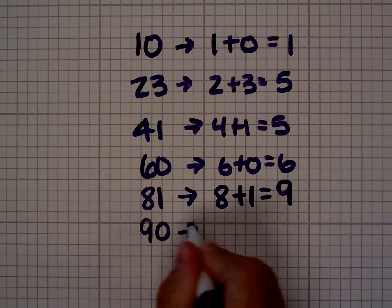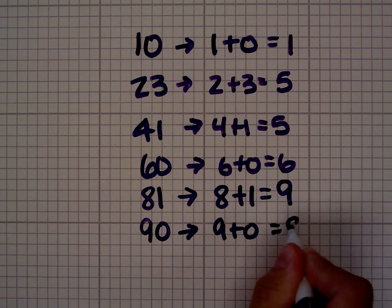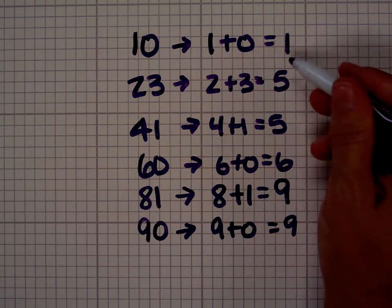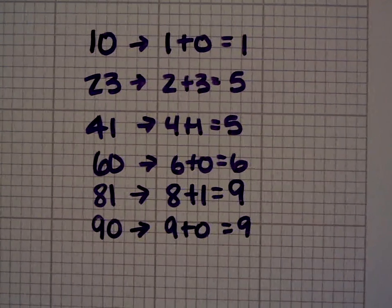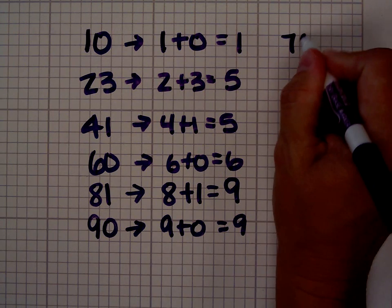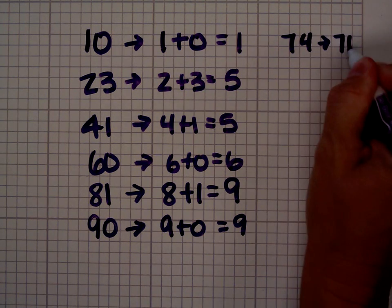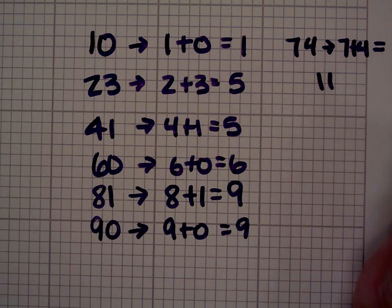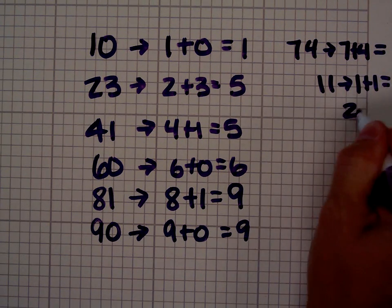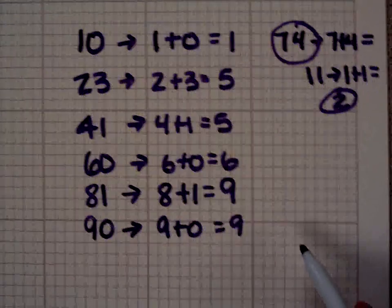90 has a digital root of 9 as well. But what happens when you have a different kind of number? A number that when you add them together you get a two-digit number for the answer instead of a single digit number. Well, you simply add those together. So if we wanted to look at 74, it's 7 plus 4 which is 11. Then you add 1 plus 1 and get 2. So the digital root of 74 is 2.